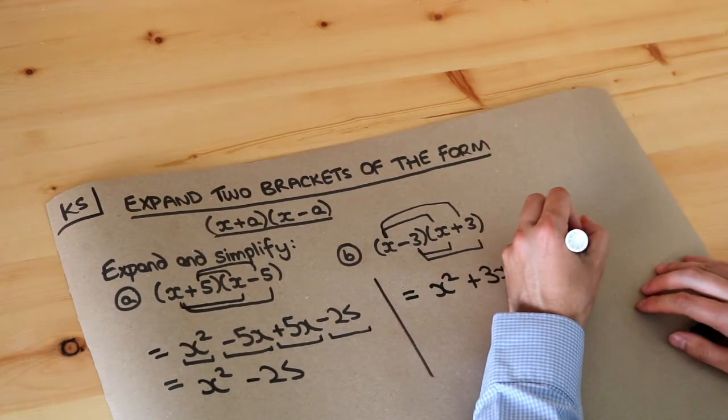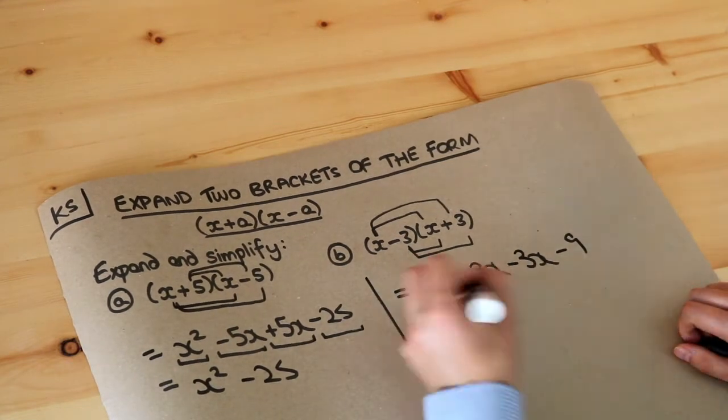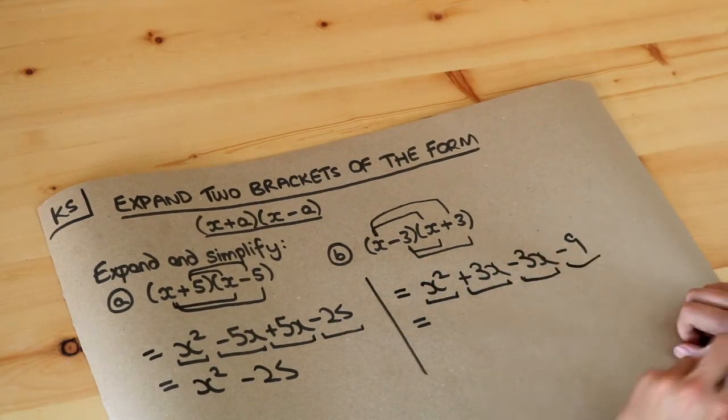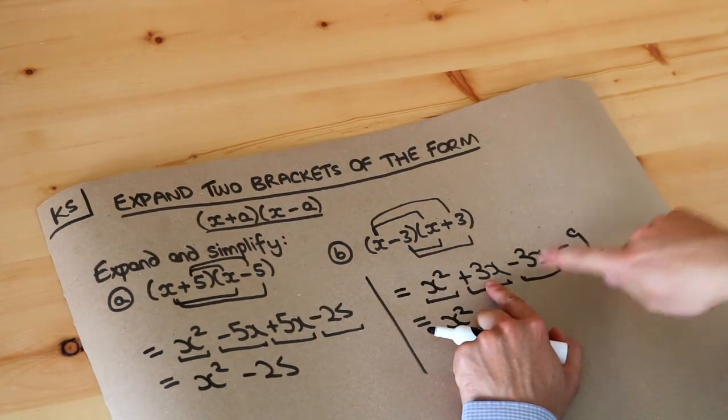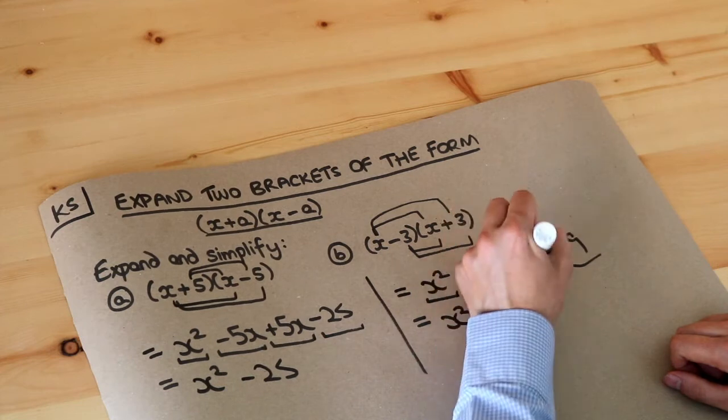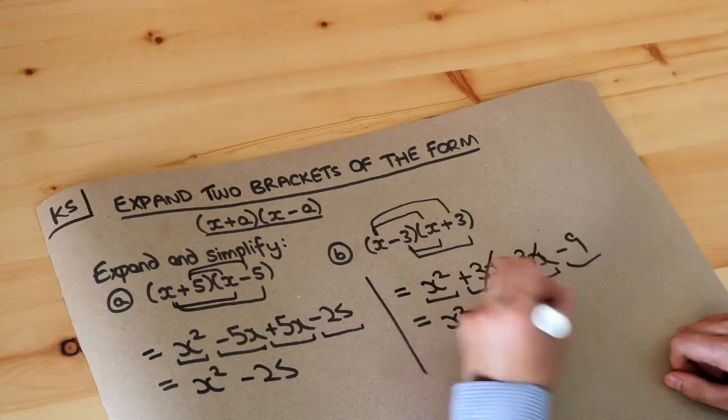And again we underline these. The x² is the only x² term, but the +3x and the -3x cancel each other out, and we've still got that -9. And we get x² - 9.